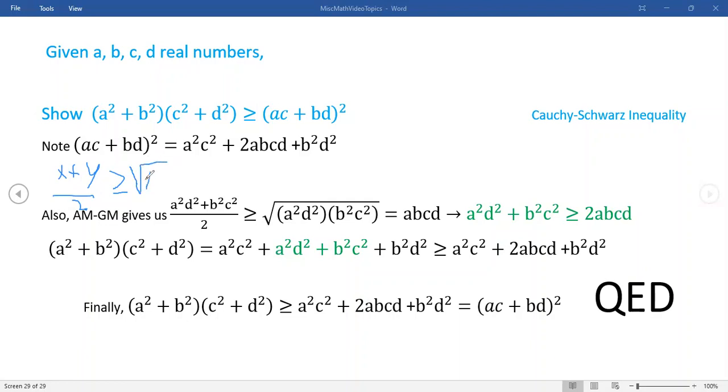I've known this most of my mathematical life, that this is called the arithmetic mean. You sum up two numbers, you divide by two. That's always going to be greater than or equal to the square root of the product. So it relates sums and products.